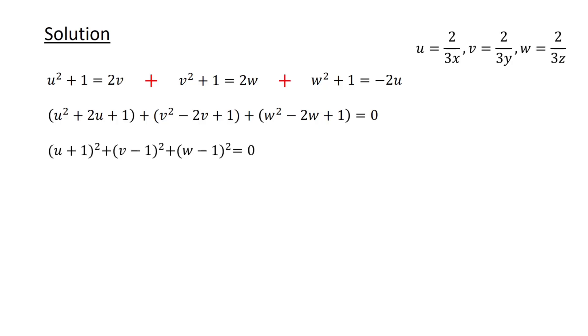We recognize the term in the first bracket as u plus 1², the term in the second bracket as v minus 1², and the term in the third bracket as w minus 1².